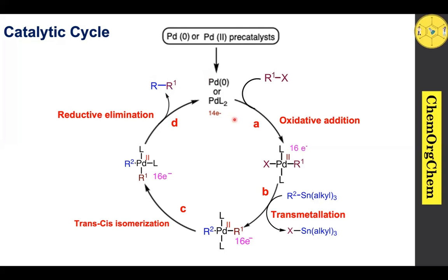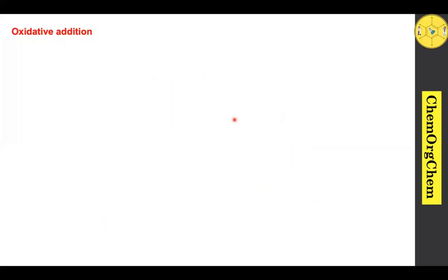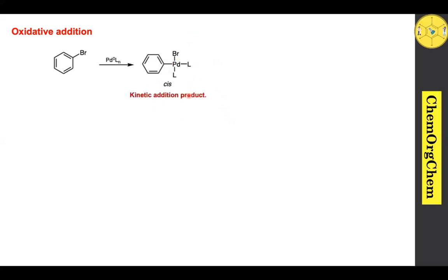Now let's break down the mechanism step by step. The first step is oxidative addition. In this step, palladium(0) reacts with the organohalide, where palladium inserts itself into the bond, forming a palladium(II) intermediate and easily producing a cis-complex. This is a kinetic addition intermediate, which quickly isomerizes to produce a thermodynamically more stable intermediate, which is trans.